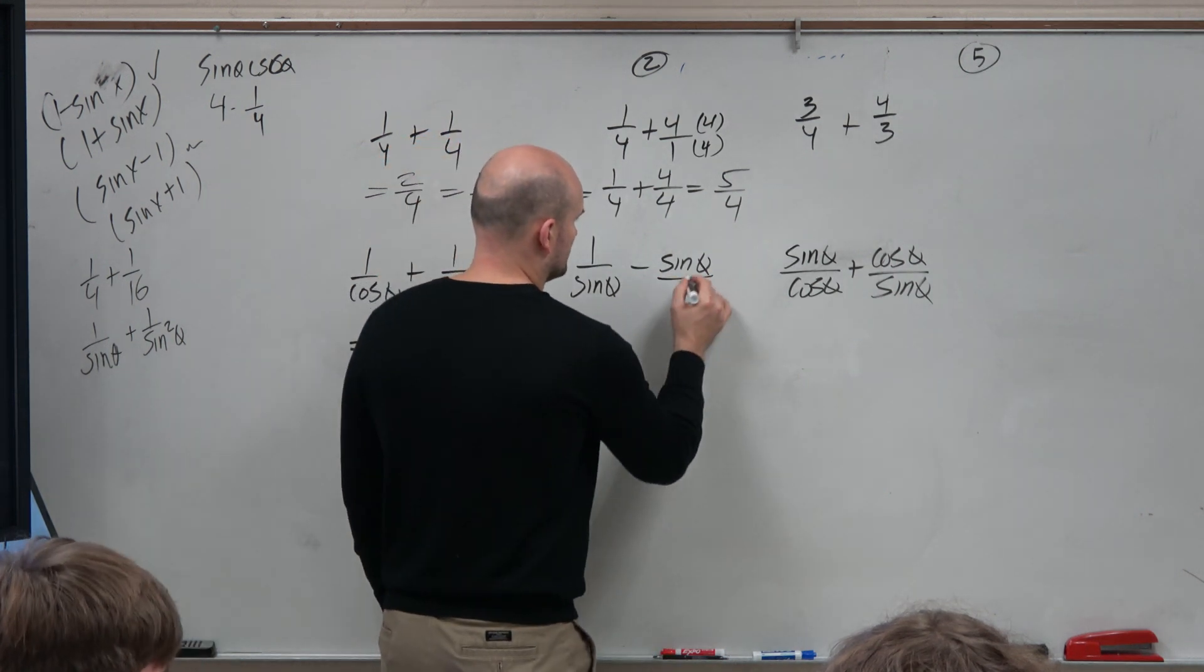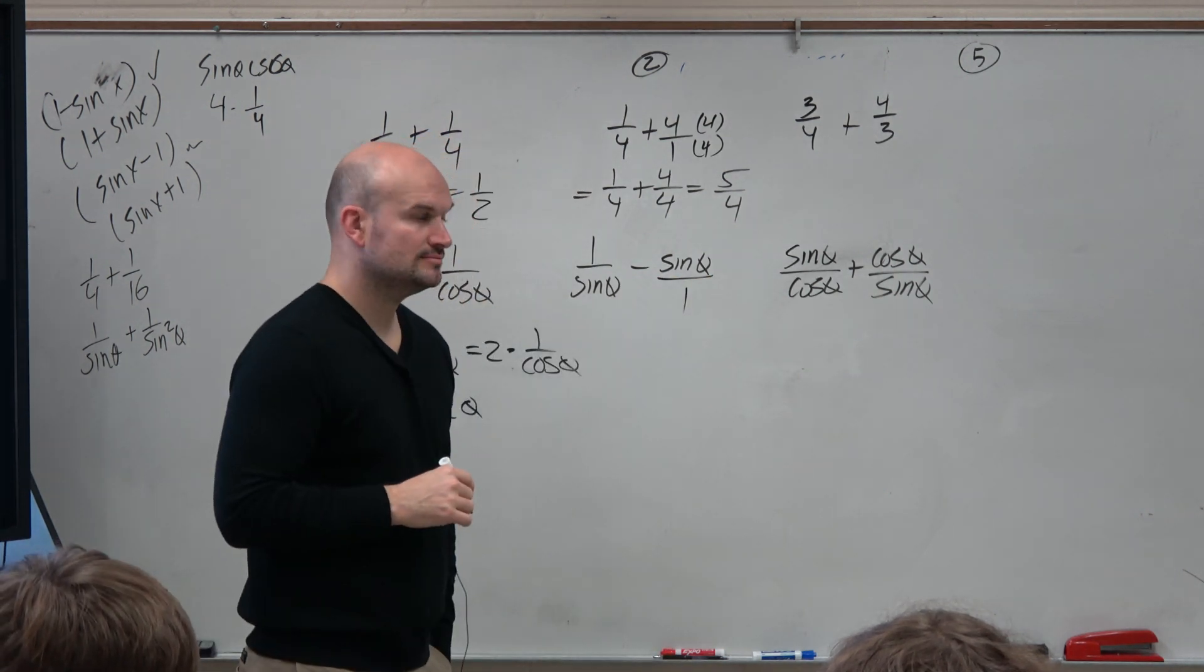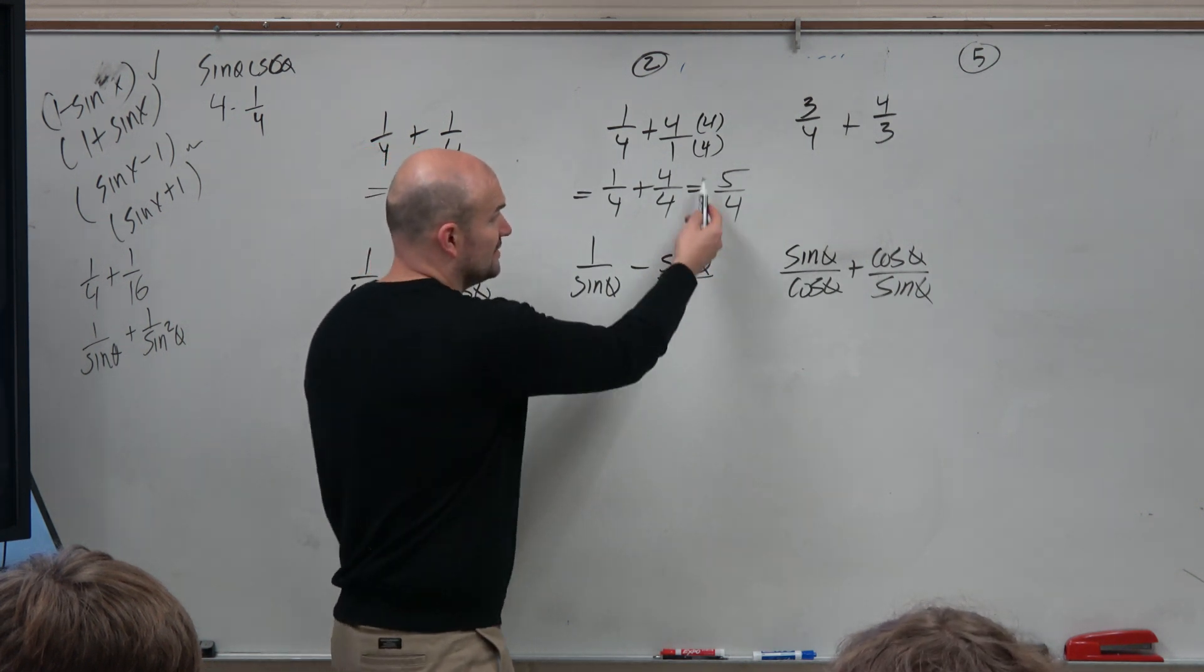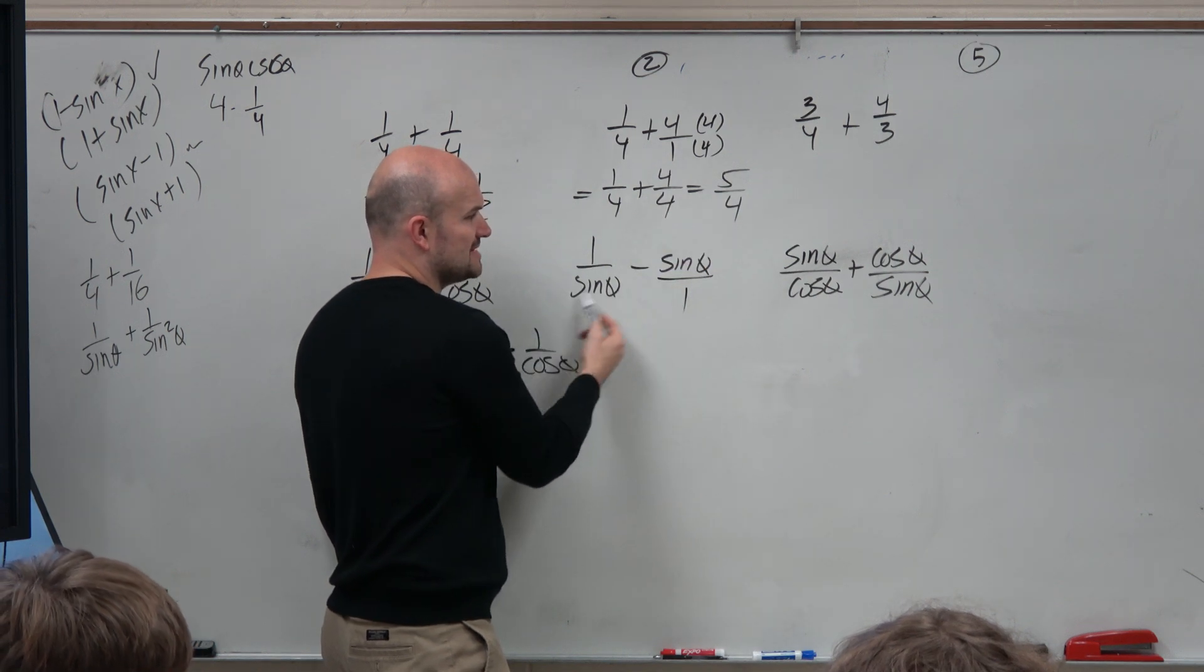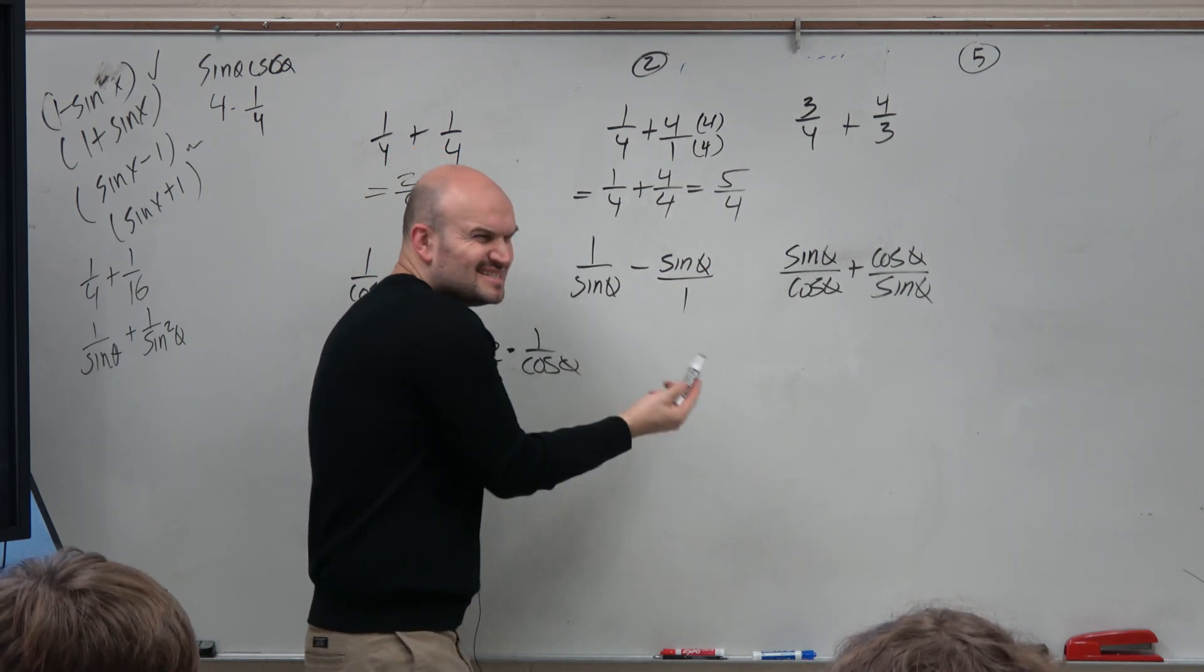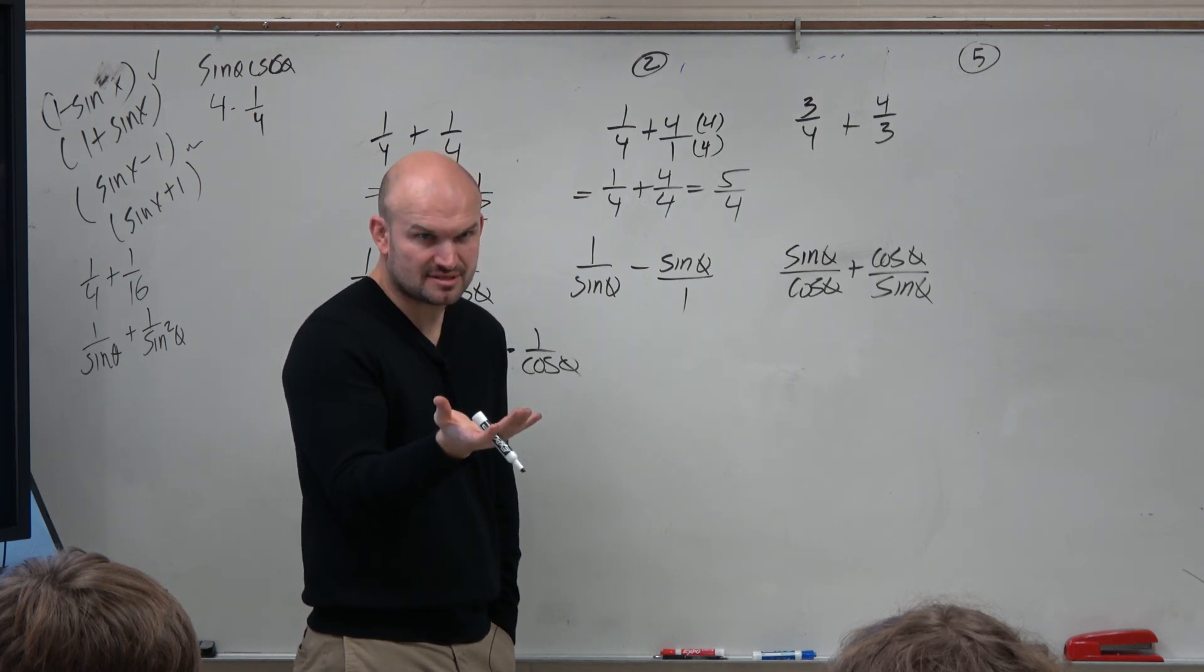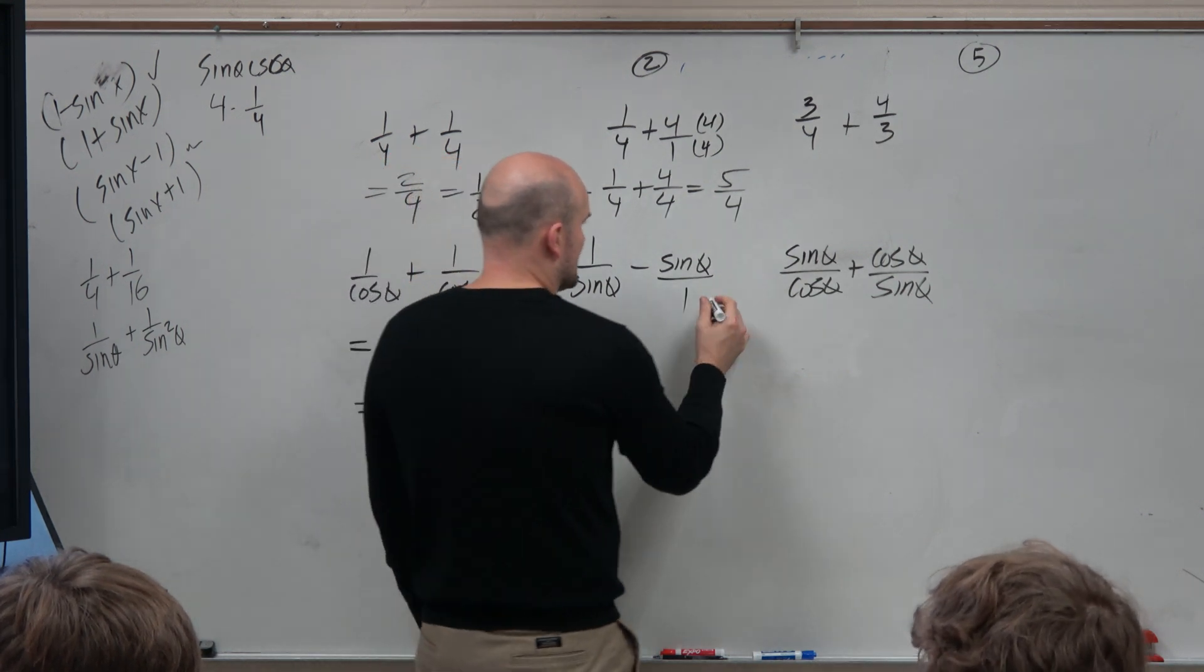So over here, I'm dividing by 1. Common denominator is now... Over here, the common denominator is 4. Now the common denominator is sine. Do you guys see how it's the same thing? It's just confusing because it's functions instead of numbers, right? But as far as the mathematical operation, it's the same.